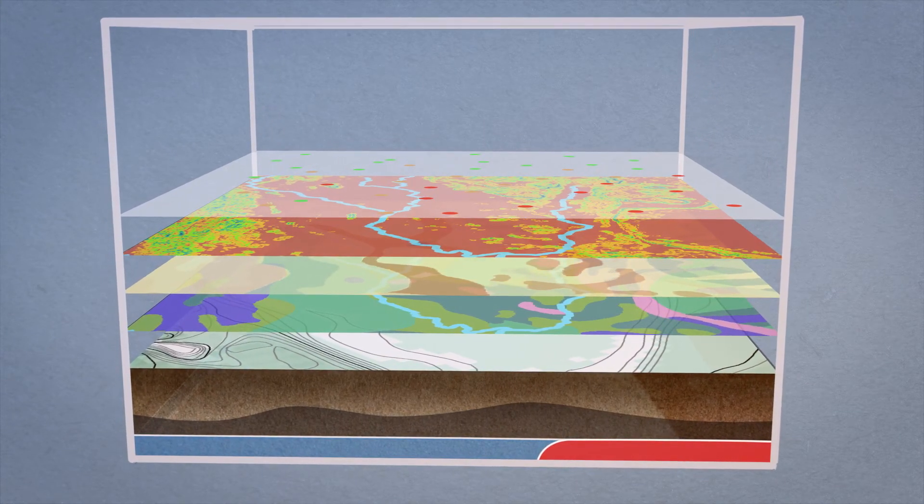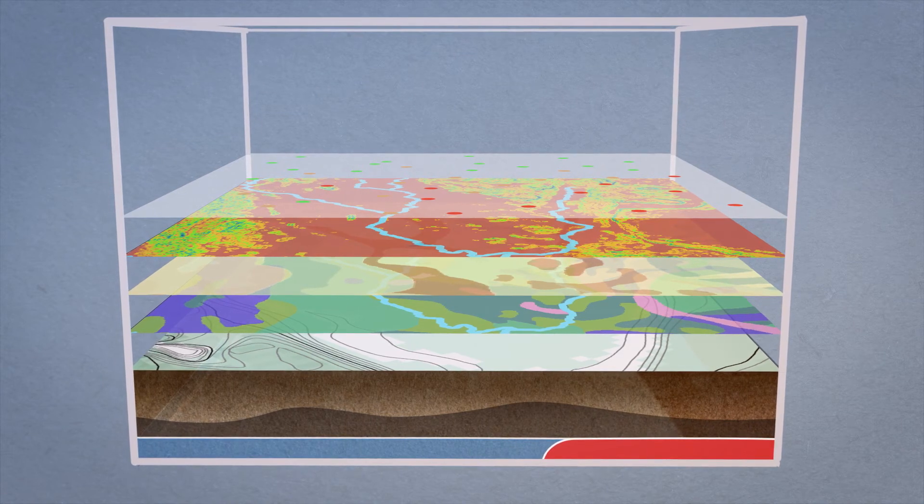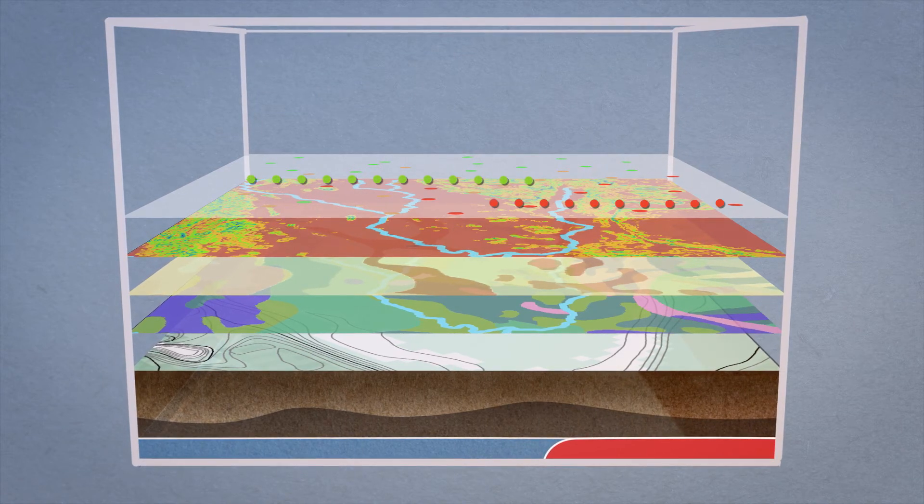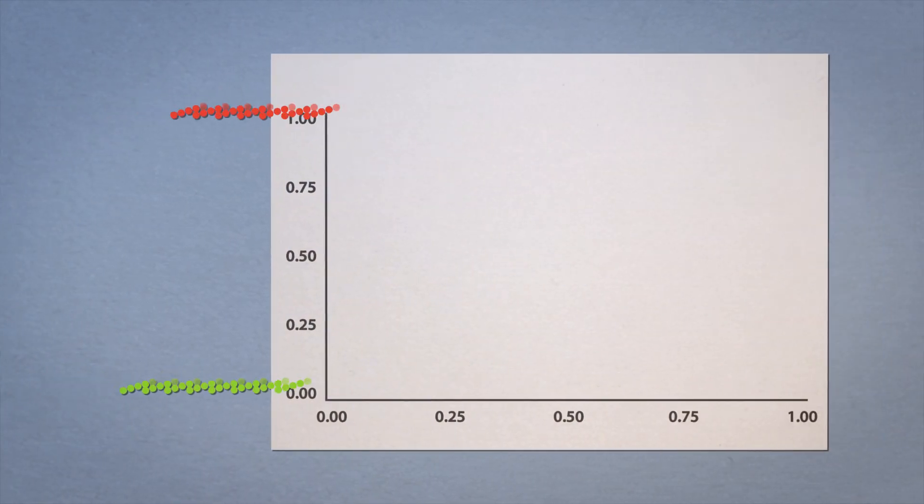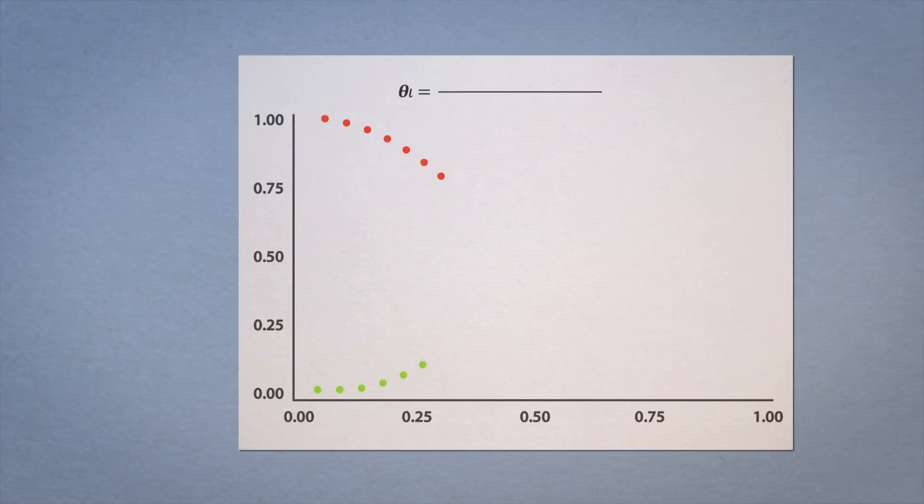GAP also has the unique capability to produce prediction maps of areas where no borehole data are available. This is accomplished by means of statistical modeling of available borehole data with spatially continuous datasets of the factors involved.